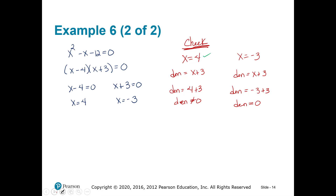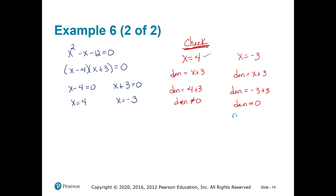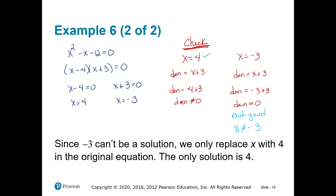Got to go check the second one — x equaling negative 3. My denominator was (x plus 3). I plug in that negative 3 and I get my denominator equaling zero. Not good at all. You cannot have x equal to negative 3 because it makes the denominator zero. So negative 3 can't be the solution, which means our only solution that works is 4.